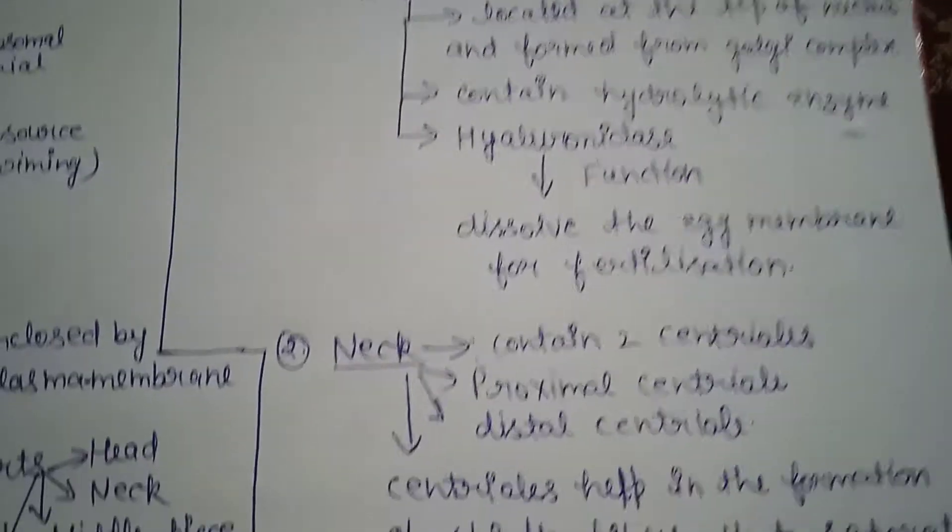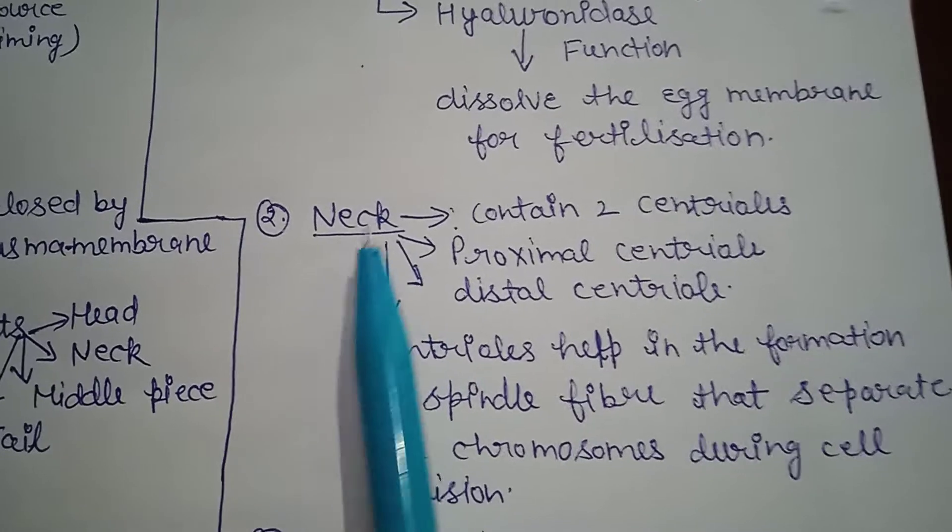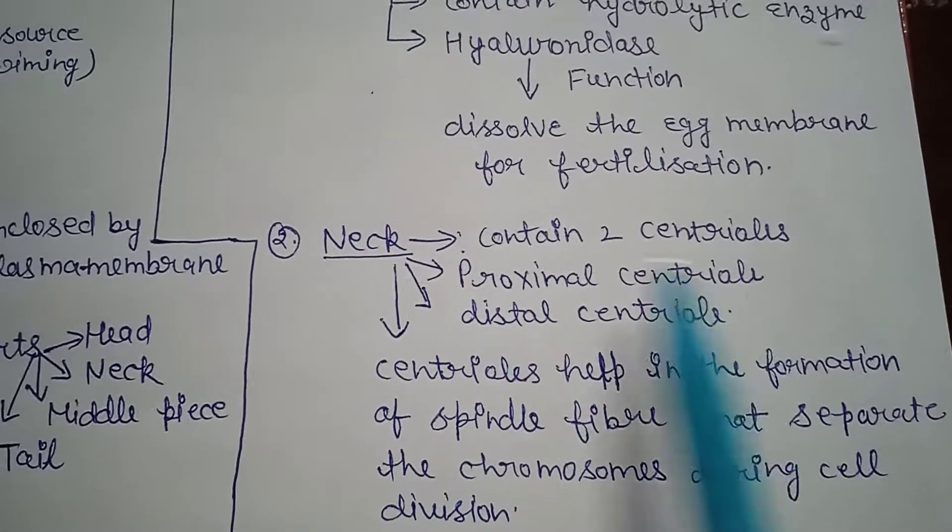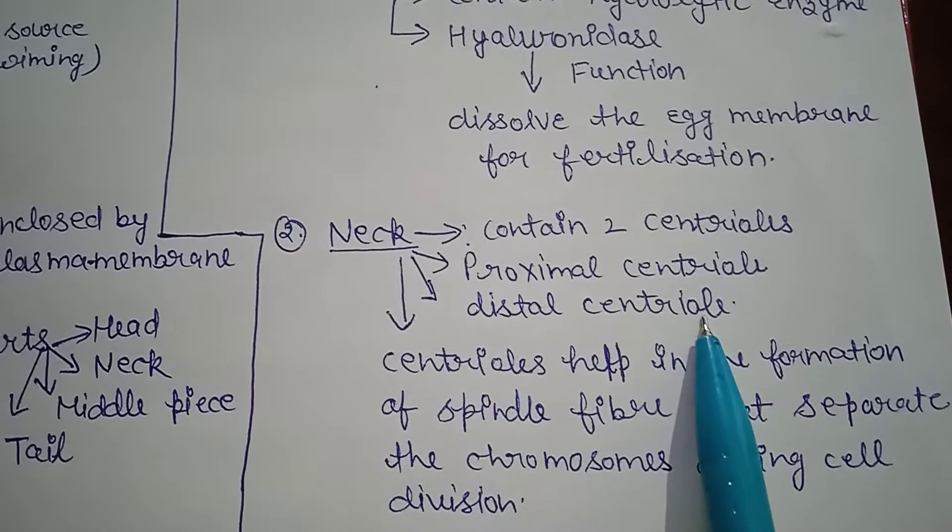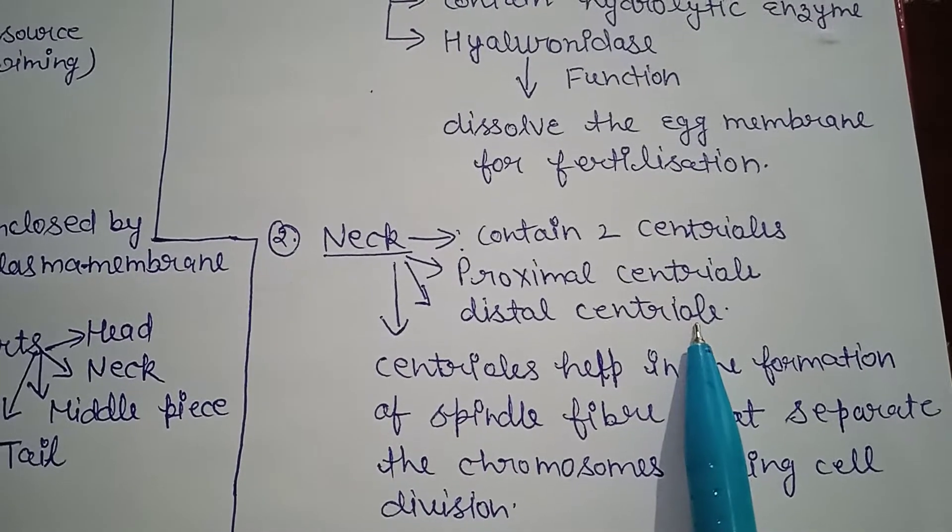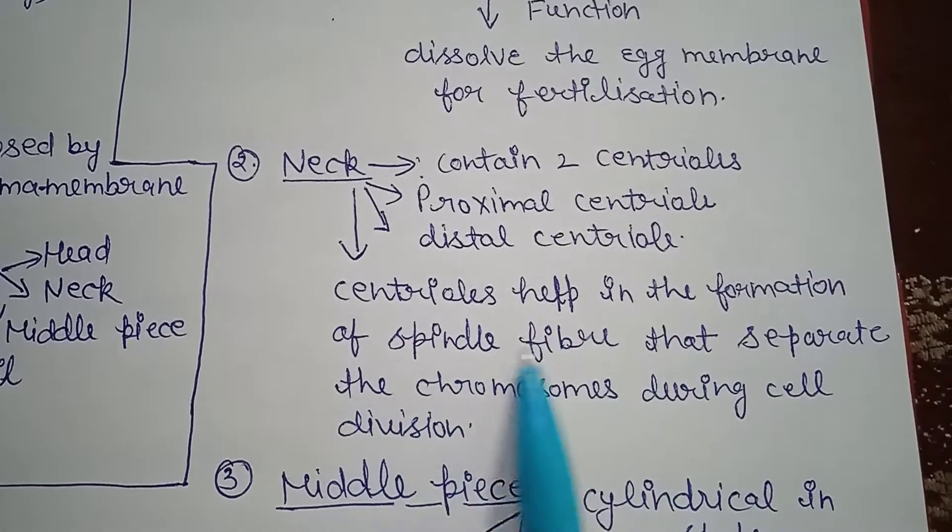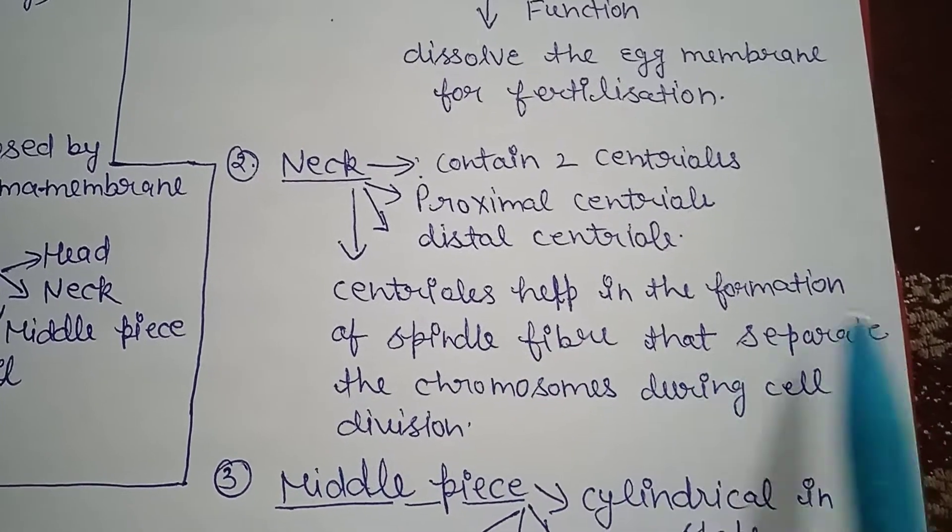Next part is neck. The neck contains two centrioles: the first one is proximal centriole and second is distal centriole. What is the function of centrioles? Centrioles help in the formation of spindle fibers that separate the chromosomes during cell division.